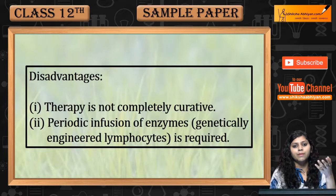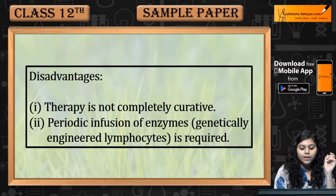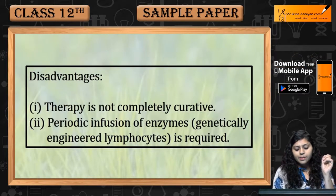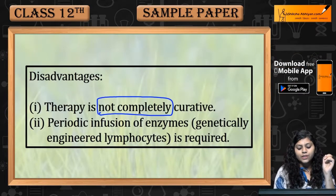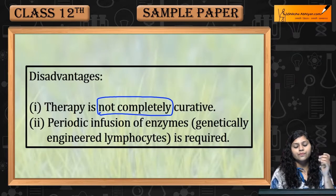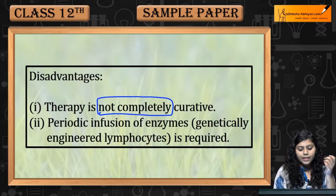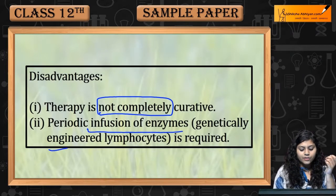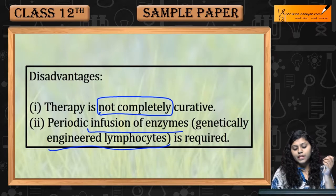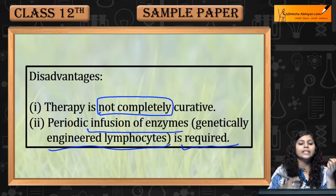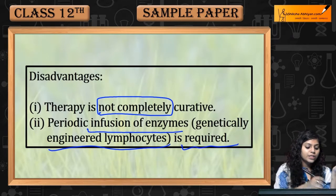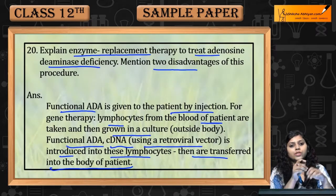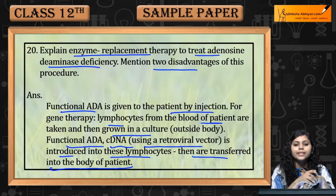This is how enzyme replacement therapy is carried out. Disadvantages: First, the therapy is not completely curative. Second, periodic infusion of the enzyme is required, and genetically engineered lymphocytes must also be given periodically.